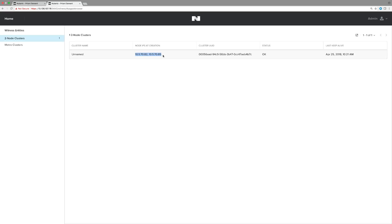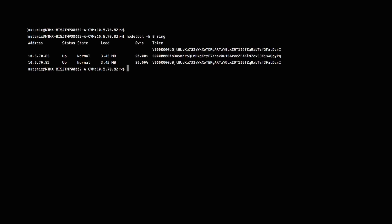You can use the same witness VM as in Metro if you use that feature, or it can be downloaded from the support portal. Now jumping over to the command line of node A. This is in the normal state now. As you can see, the metadata is equally distributed between the two nodes.